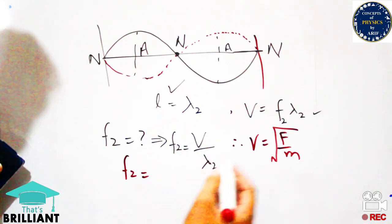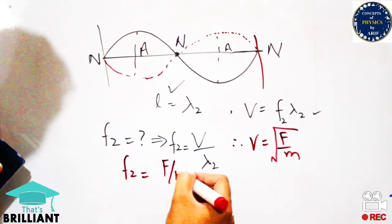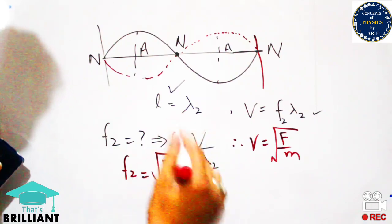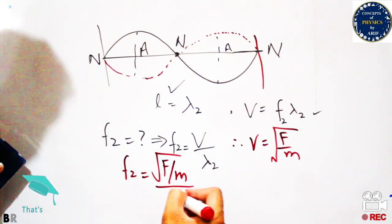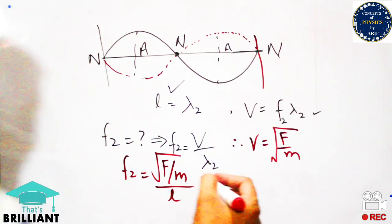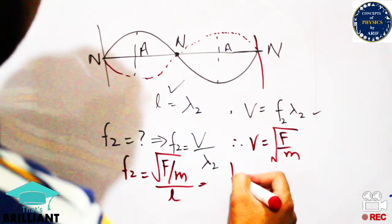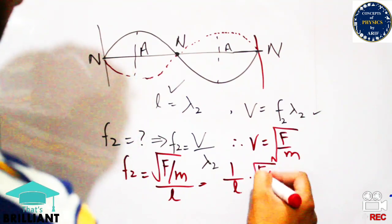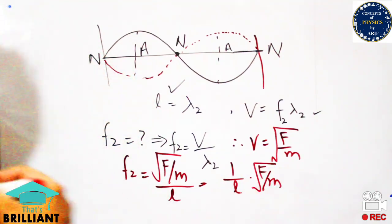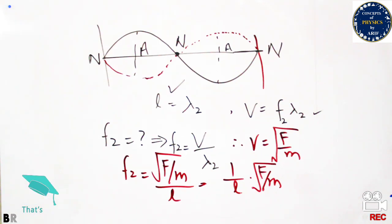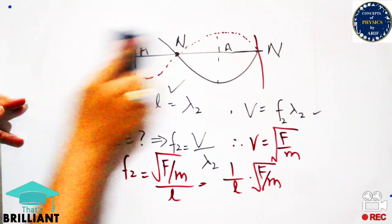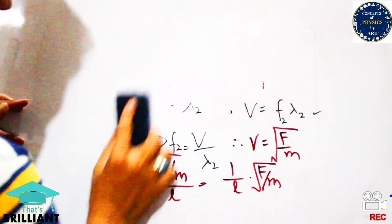So f₂ equals v over lambda₂. The value of v is square root of F over m and lambda₂ equals l, so replacing lambda₂ with l gives: f₂ equals 1 over l times square root of F over m. Comparing: f₁ was 1 over 2l times square root of F over m, and f₂ is 1 over l times square root of F over m — there is a clear difference between f₁ and f₂.